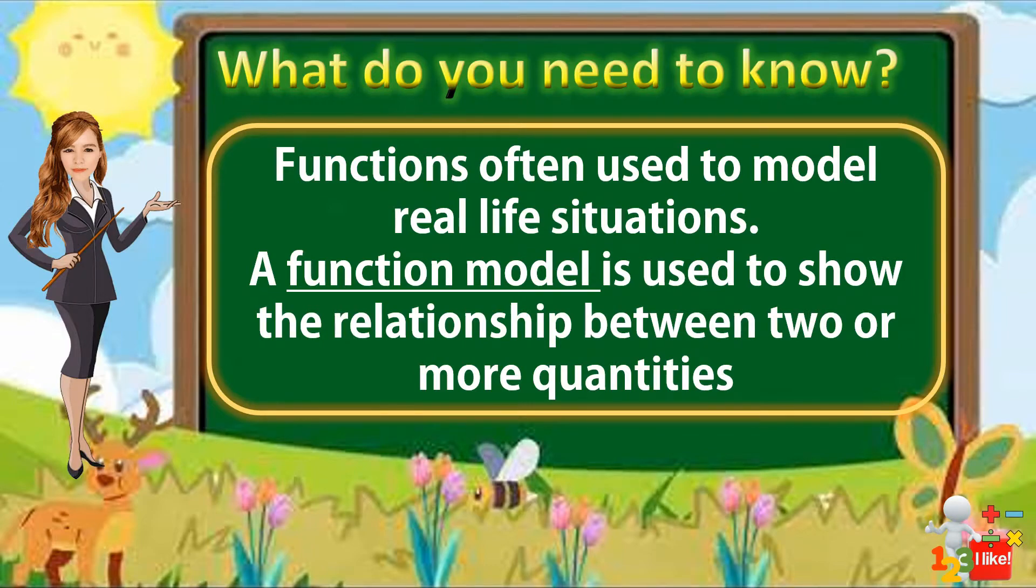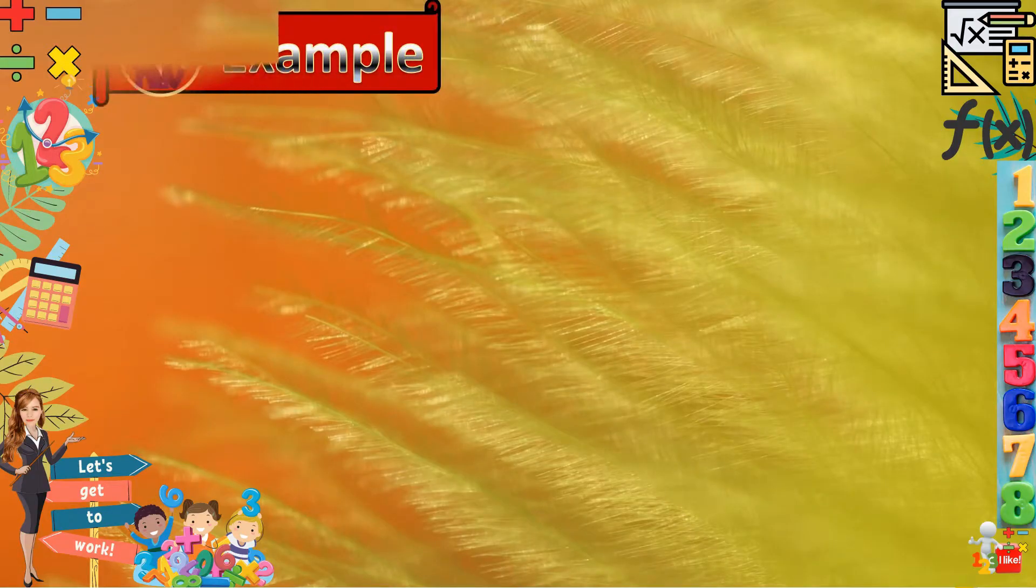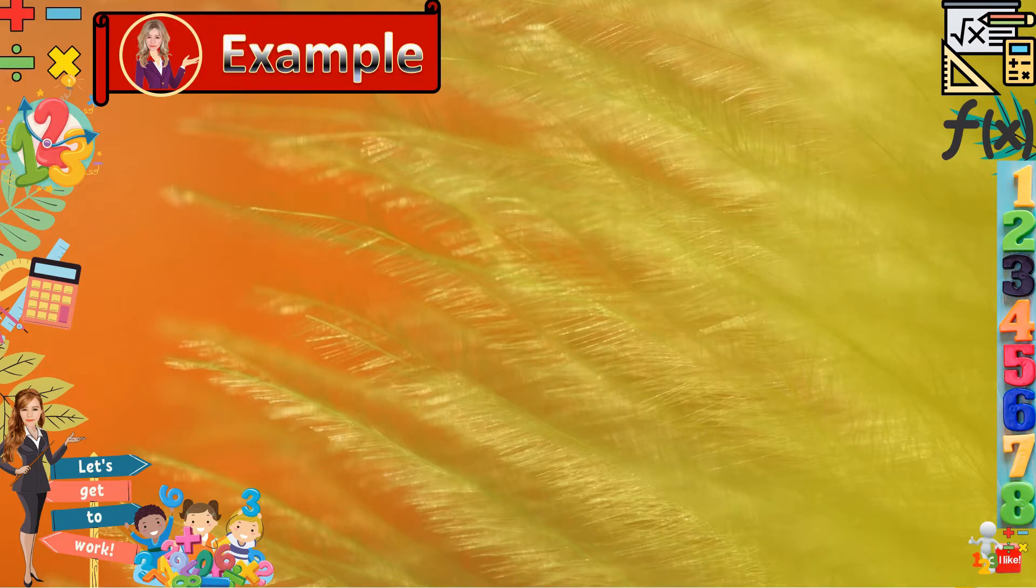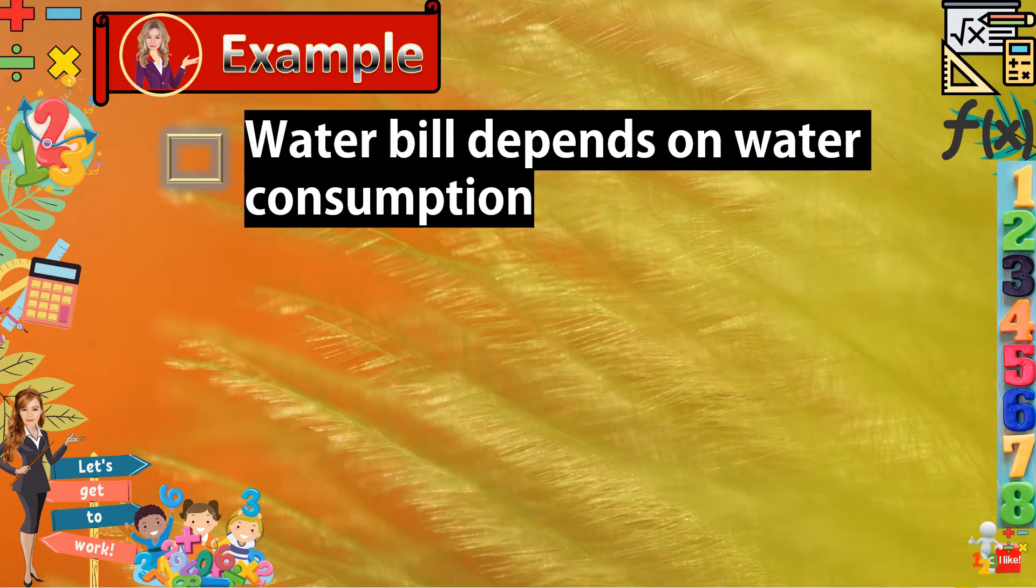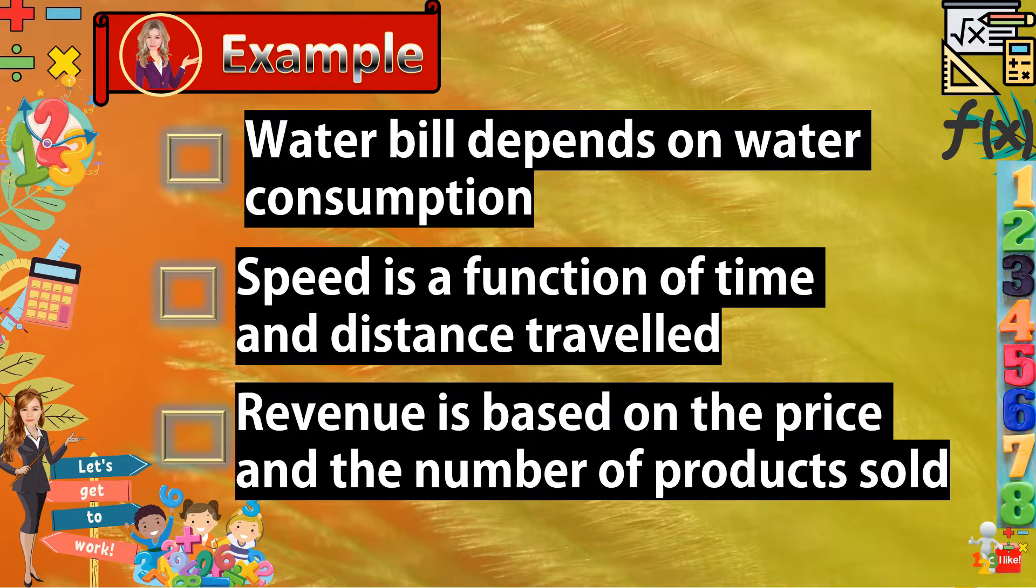Functions are often used to model real-life situations. A function model is used to show the relationship between two or more quantities. In everyday life, many quantities differ on one or more variables. Let us have an example. Water bill depends on the water consumption. Speed is a function of time and distance travel. Revenue is based on the price and the number of products sold.